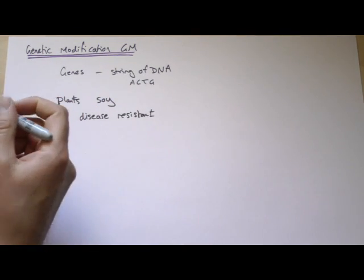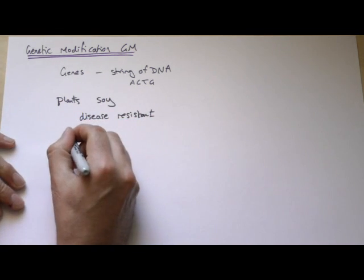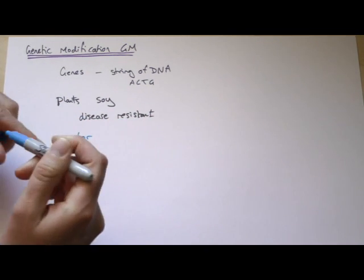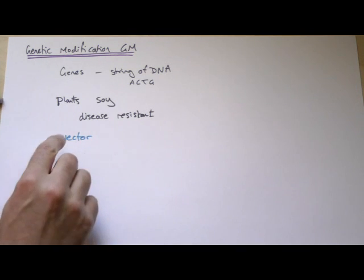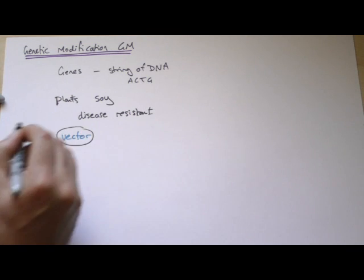Now the difficult part comes when you actually have to get the gene into a cell. You can't simply drop these genes in. So you need something called a vector. And a vector is something that's going to carry the gene for you.